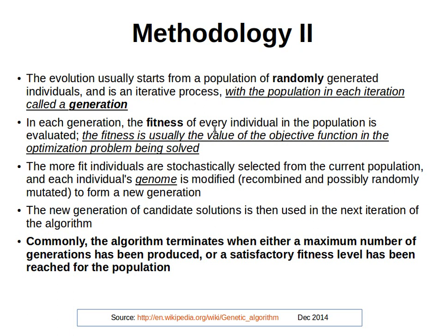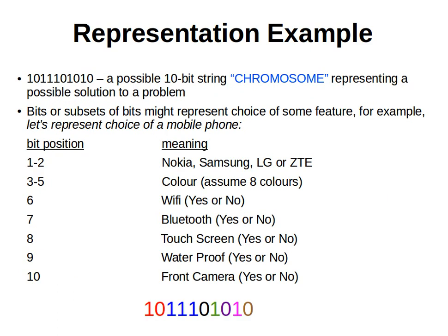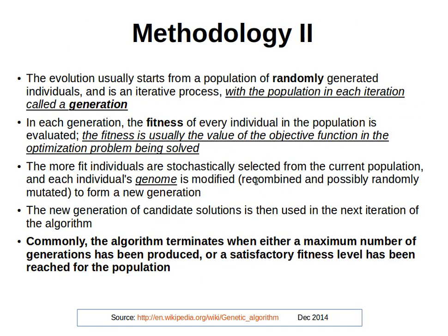In each generation, the fitness of every individual in the population is evaluated. The fitness is usually the value of the objective function in the optimization problem being solved. We check how good each solution is — does it solve the problem, and how close is it to the actual solution we are looking for? The most fit individuals are stochastically selected — there is a bit of randomness — from the current population, and each individual's genome is modified. We try to change the properties to find a better solution. We can do recombination or random mutation to form a new generation, getting rid of the weaker solutions and finding better ones.